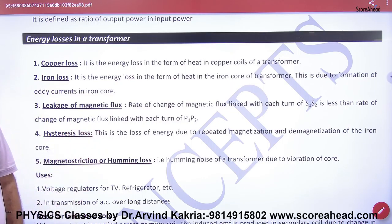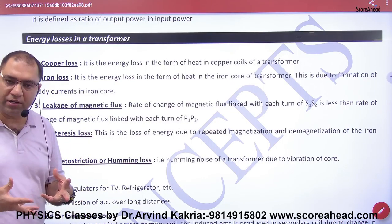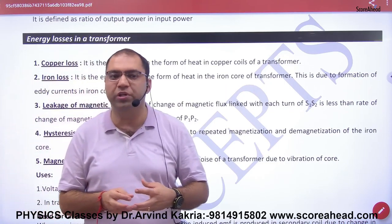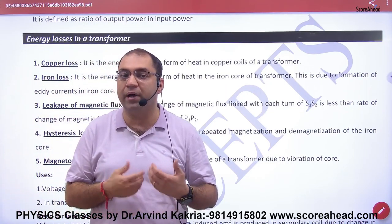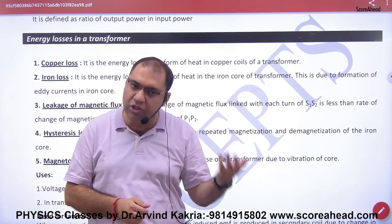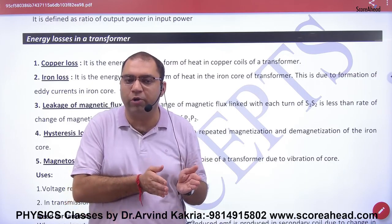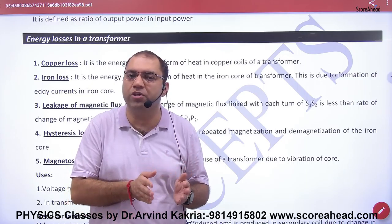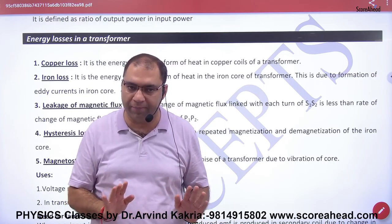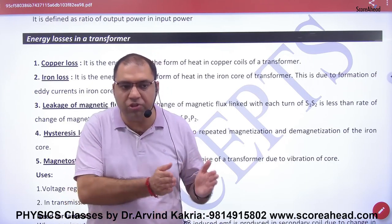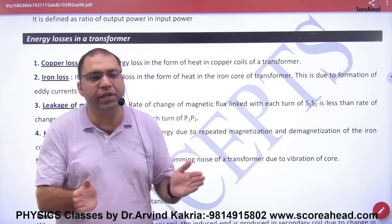The third loss is leakage of magnetic flux. When the current changes in one wire and the flux changes, we expect the whole flux to be transferred. But in reality, some flux extends beyond the coils and is not fully transferred, so there is less change — this is called leakage of magnetic flux.